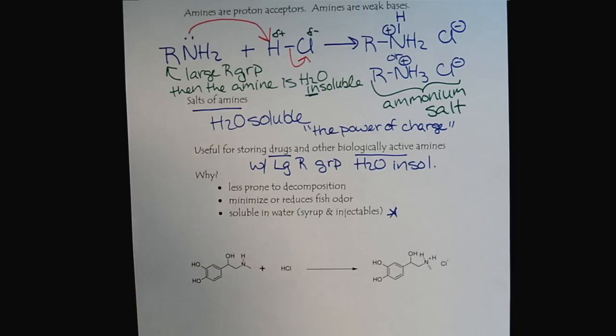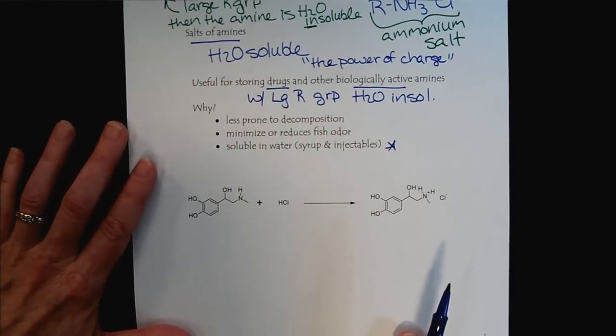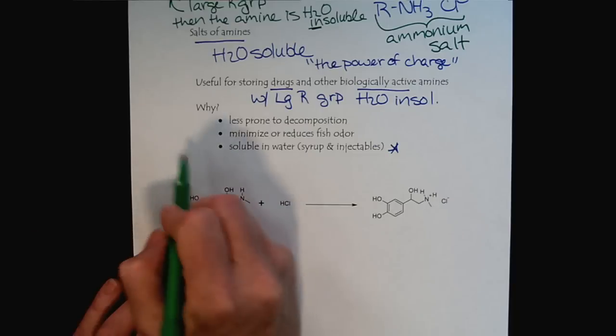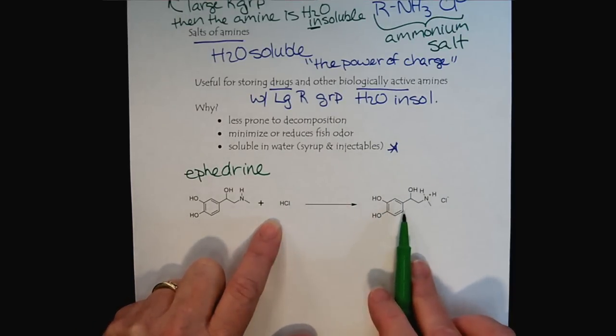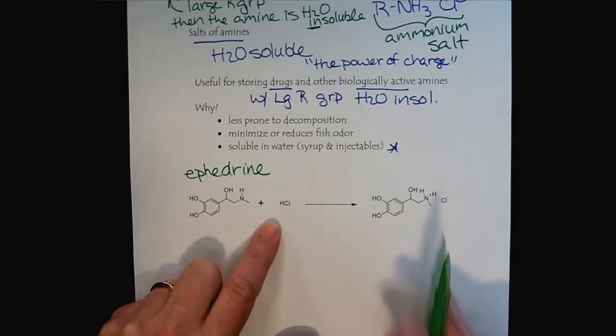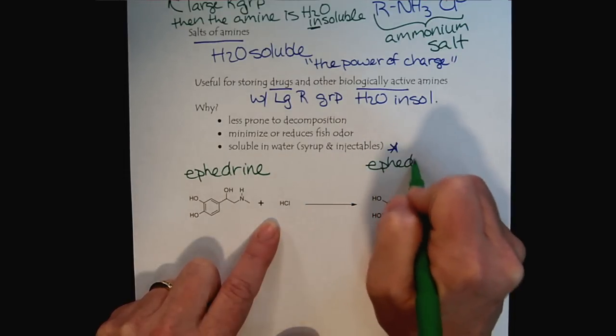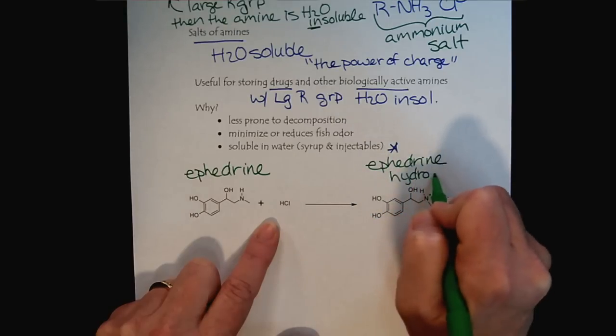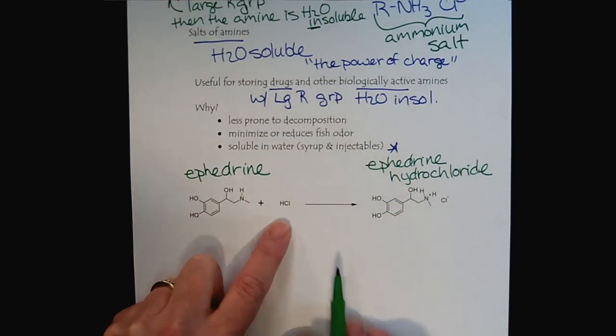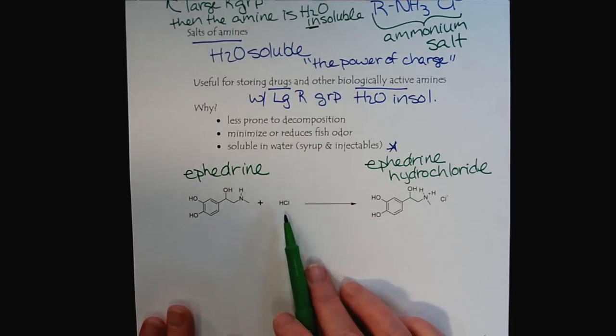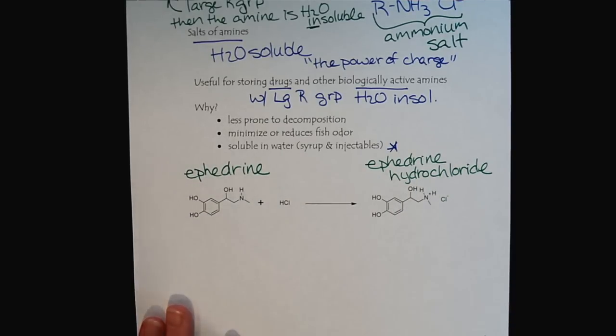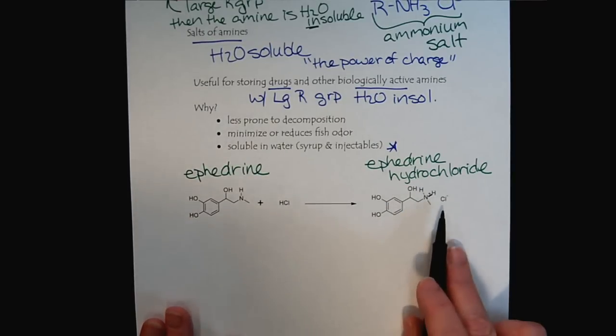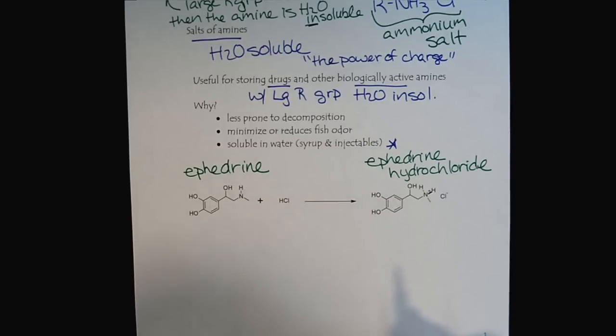Let's look at an example of how we could use the acid-base chemistry. Here is a molecule of ephedrine. We're going to react it with hydrochloric acid. Here is the ammonium salt. The name for the ammonium salt would be ephedrine hydrochloride. We'll learn that a variety of acids could be used to create the ammonium salt, and so we let everybody know which acid we used.